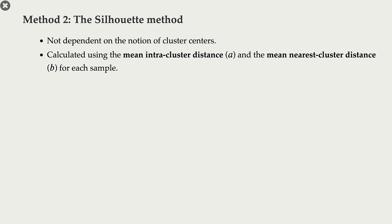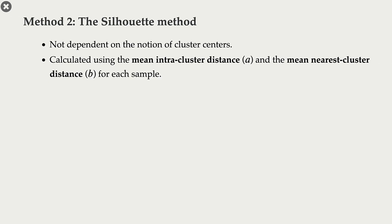Another method we can use to choose k is the silhouette method. Unlike the elbow method, the silhouette method is not dependent on the notion of cluster centers — the elbow method is specific to k-means because it relies on cluster centers. The silhouette method can be used for other clustering algorithms as well.